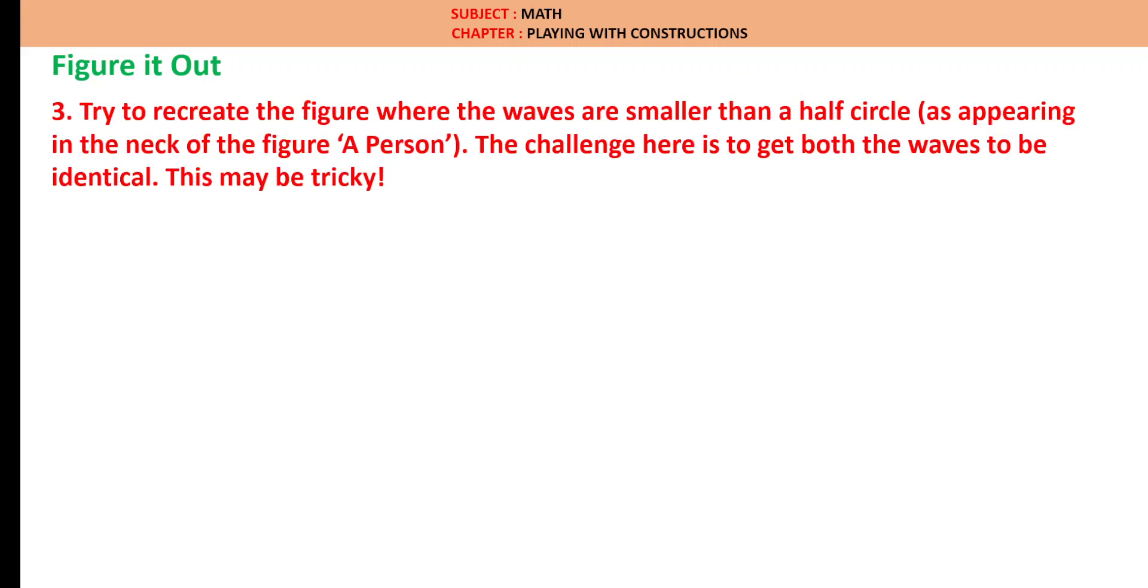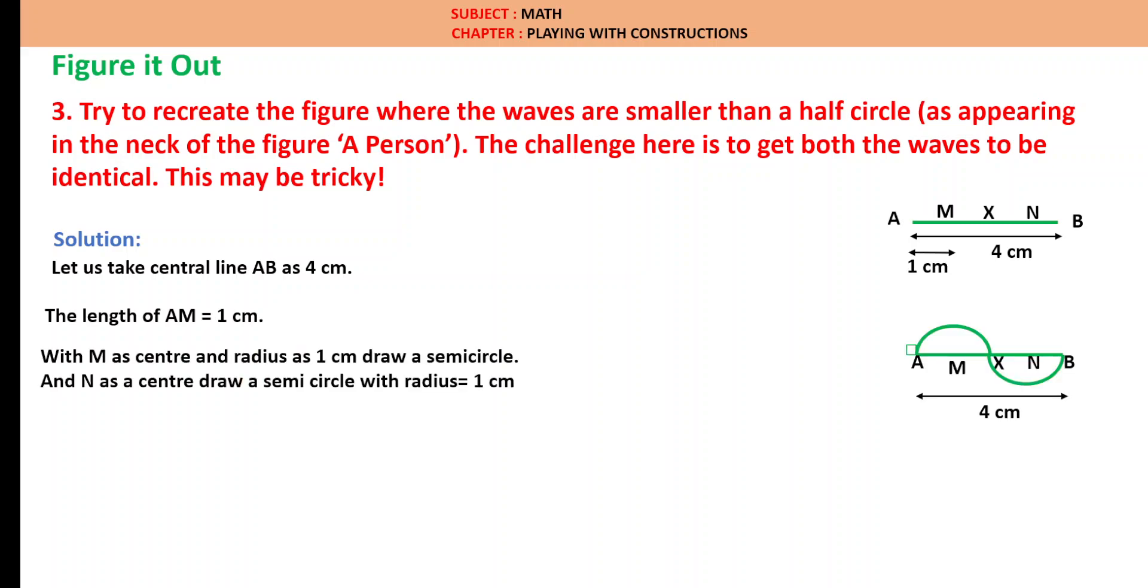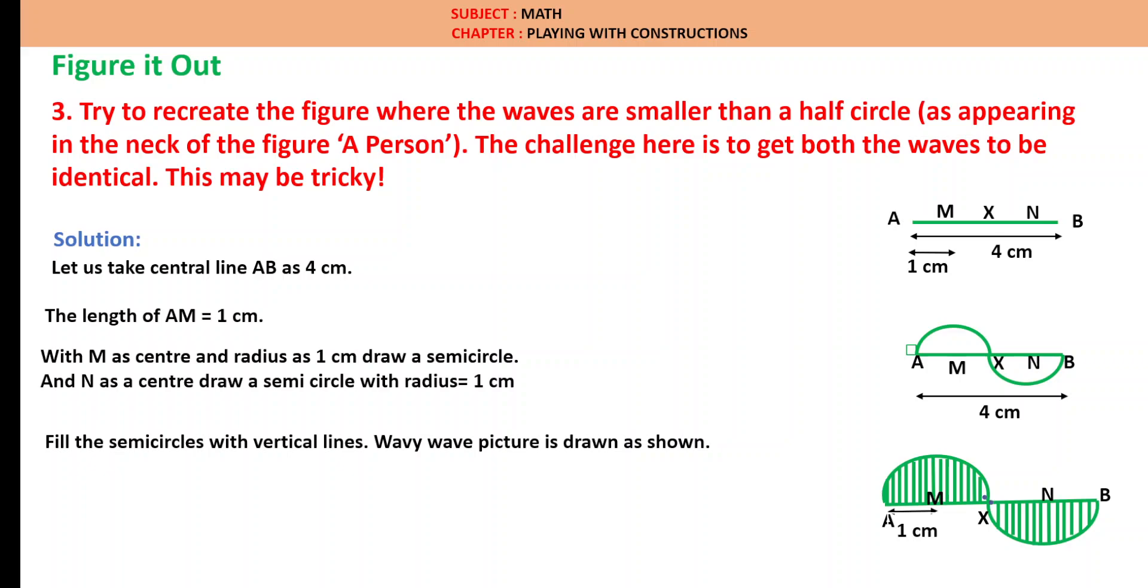Figure it out, Third question: Try to recreate the figure where the waves are smaller than half-circle as appearing in the neck of the figure a person. The challenge here is to get both the waves to be identical. Solution: Let us take central line AB as 4 cm. The length of AM is 1 cm. With M as a center and radius as 1 cm, draw a semicircle. And N as a center, draw a semicircle with radius 1 cm. Fill the semicircle with vertical lines. Wavy wave picture is drawn as shown in the figure.